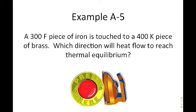Example A5: A 300°F piece of iron is touched to a 400 Kelvin piece of brass. What direction will heat flow to reach thermal equilibrium? People automatically say 400 is bigger than 300 so heat flows from high to low, but you have to notice the scales are different — Fahrenheit and Kelvin. You can't determine direction until both are in the same temperature scale, so you need to convert 300°F to Kelvin.